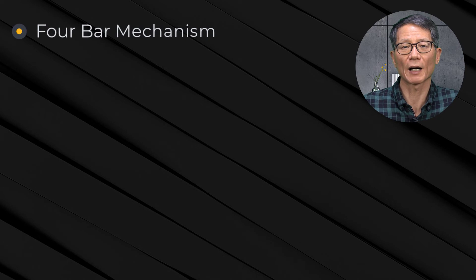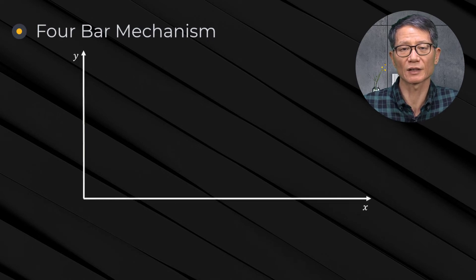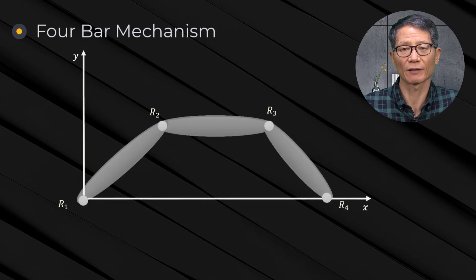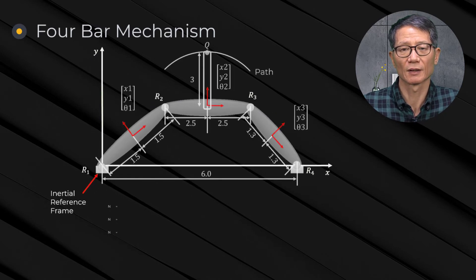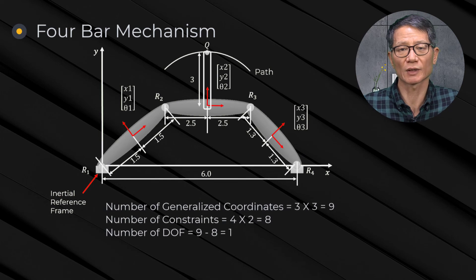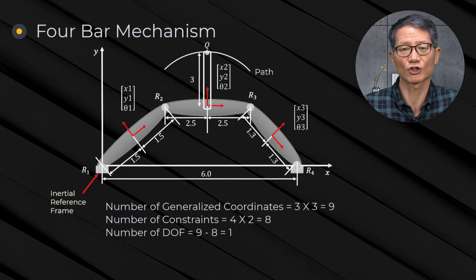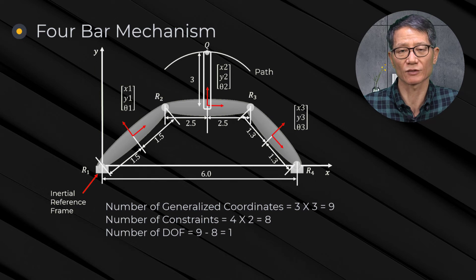A four-bar mechanism. Let us consider an example model consisting of three bodies and four revolute joints. There are nine generalized coordinates, three from each body. There are eight constraints, two from each revolute joint. As a result, the system has nine minus eight equal to one degrees of freedom.